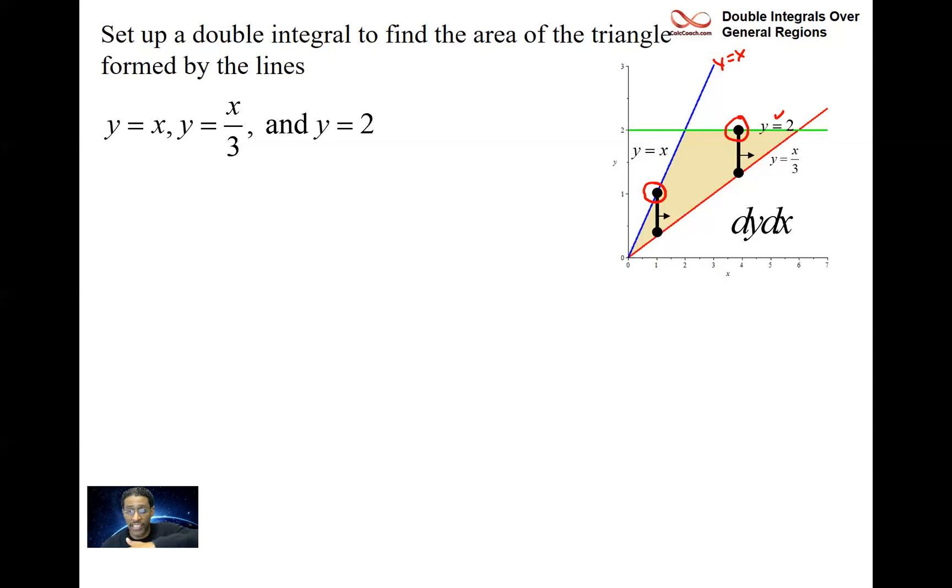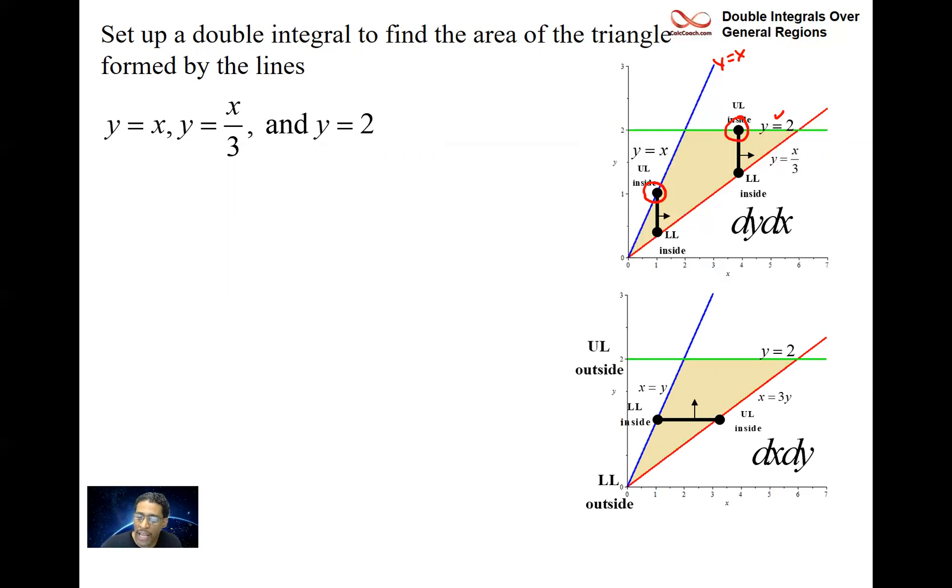Let's switch to dx dy. So we have our functions. Now dx dy is a horizontal slice moved upward. The rightmost is always the curve x equals 3y. You got to solve for x. The leftmost is always the curve x equals y. And it never changes as you move upward from zero to two. So you have your upper limit inside being 3y, lower limit inside being y, lower limit outside being zero, upper limit outside being two. And you're trying to find the area of this region.